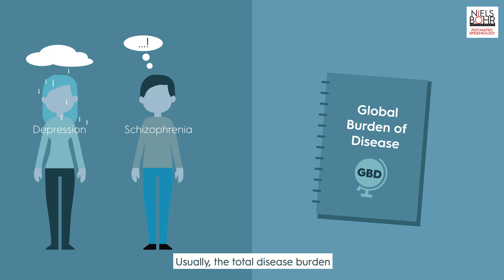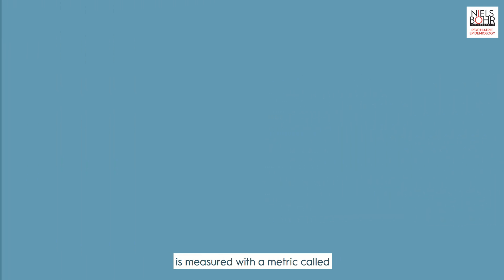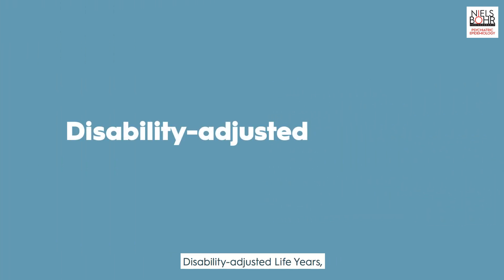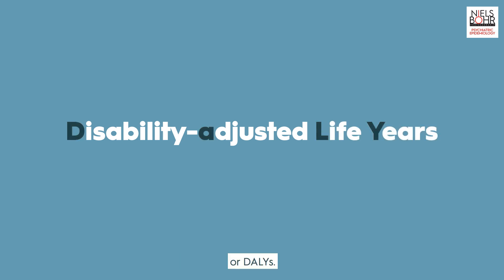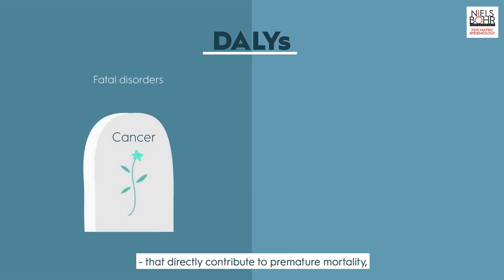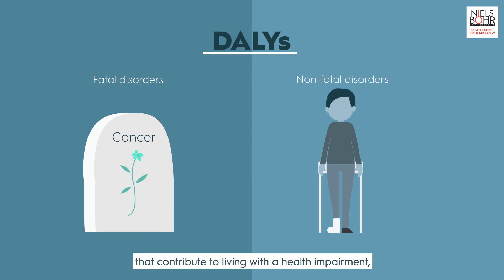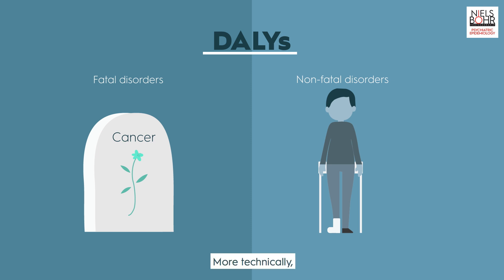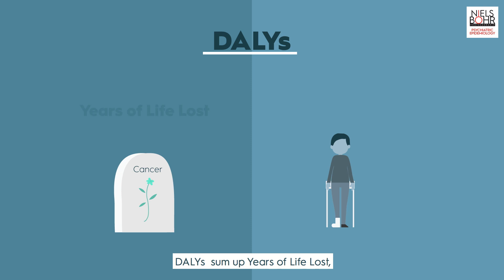Usually, the total disease burden is measured with a metric called Disability Adjusted Life Years, or DALYs. DALYs allow us to combine the impact of fatal disorders that directly contribute to premature mortality, and non-fatal disorders that contribute to living with a health impairment which results in a disability. More technically, DALYs sum up years of life lost and years lived with disability.